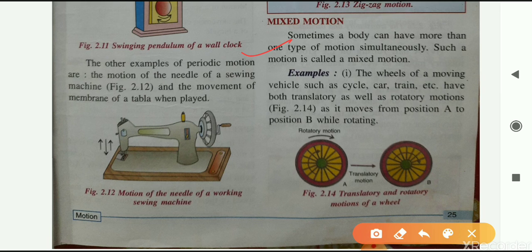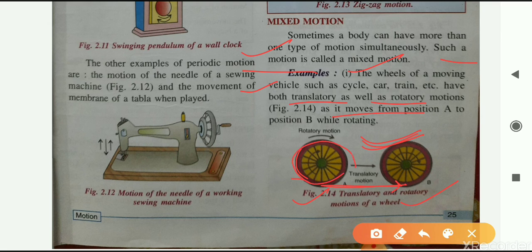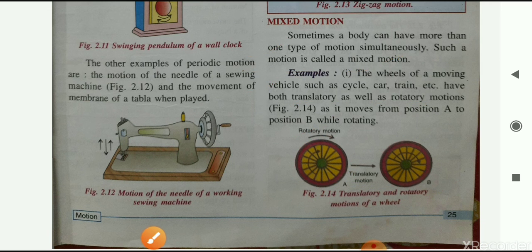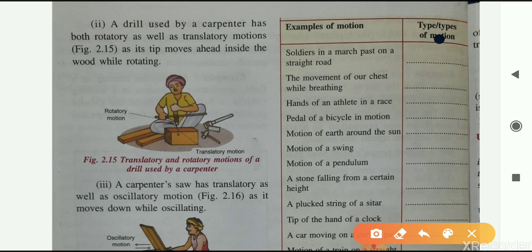Sometimes a body can have more than one type of motion simultaneously — this is called mixed motion. For example, the wheels of a moving vehicle such as a cycle, car, or train have both translatory and rotatory motion as they move from position A to B while rotating. Another example is a drill used by a carpenter, which has both rotatory and translatory motion as its tip moves forward into the wood while rotating.